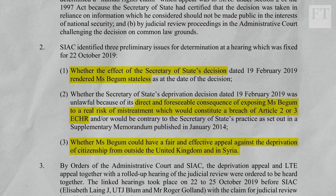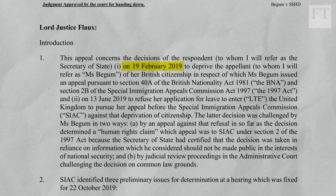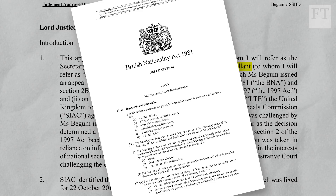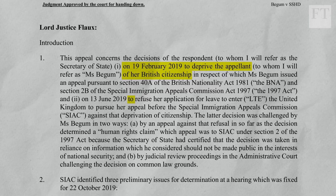The two decisions of the Secretary of State fundamental to the case are set out in paragraph one of the judgment. The first is that on the 19th of February 2019, there was the decision to deprive her of her citizenship under Section 40A of the British Nationality Act 1981 as amended. The second decision is the Secretary of State's refusal of her application for leave to enter. So we have two decisions by the Secretary of State, an attempt by Ms. Begum to appeal those decisions at SIAC, and now her appeal to the Court of Appeal in respect of the preliminary decisions of SIAC.